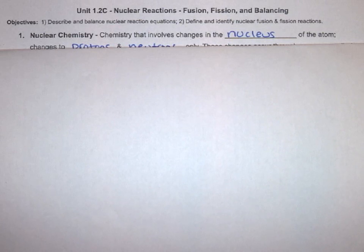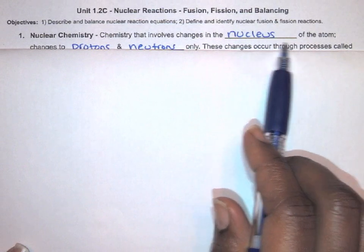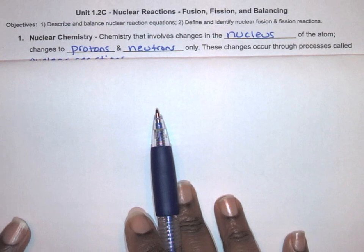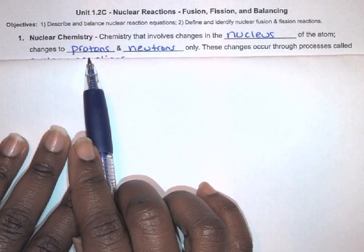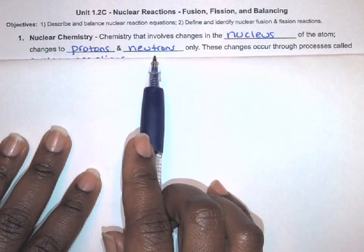Let's start with a definition of nuclear chemistry. Nuclear chemistry is chemistry that involves changes in the nucleus of the atom. Since it involves changes in the nucleus, the only things that are in the nucleus are the protons and neutrons. So it involves changes to the protons and neutrons. These changes occur through a process called nuclear reactions.